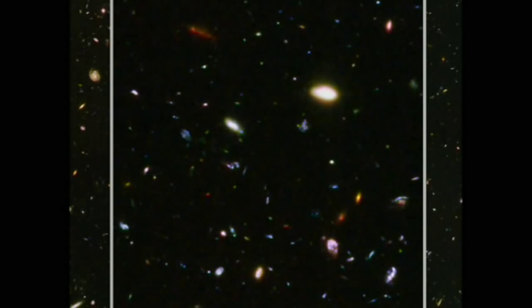In vibrant contrast to the image's rich harvest of classic spiral and elliptical galaxies, there is also a zoo of oddball galaxies littering the field. Some look like toothpicks, others like links on a bracelet. A few appear to be interacting with each other. Their strange shapes are a far cry from the majestic spiral and elliptical galaxies we see today.